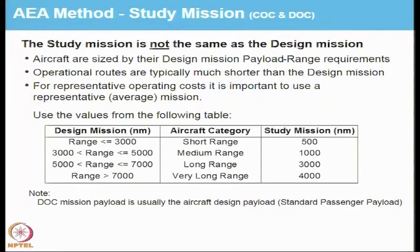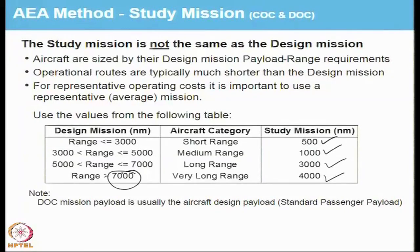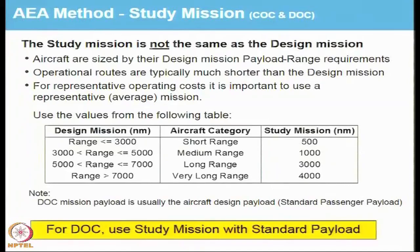Depending on the aircraft category — short, medium, long, or very long — one can look at the design mission. For a short-range mission, use a range of 500 nautical miles; medium will be 1000; long will be 3000; and extra long will be 4000. Although the aircraft can travel much farther, for the study mission we assume these values. The mission payload is usually the aircraft design payload, the standard passenger payload, which gives a good estimate of the DOC.